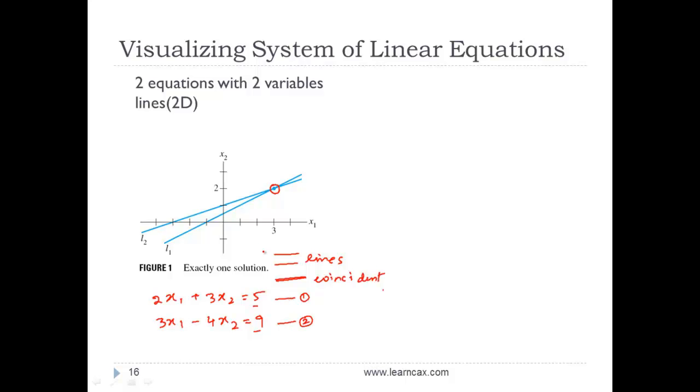So with two equations and two variables, we have three types of solutions. One is intersecting, second one is parallel, third one is coincident.